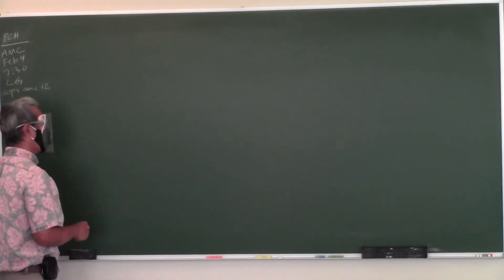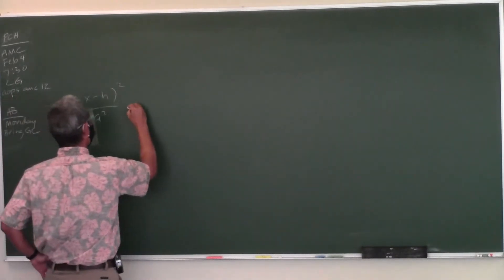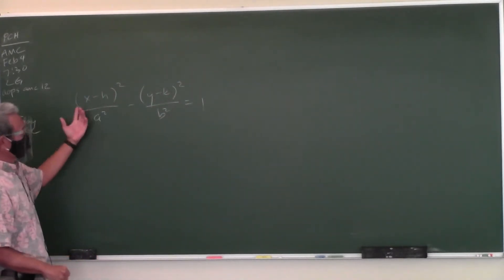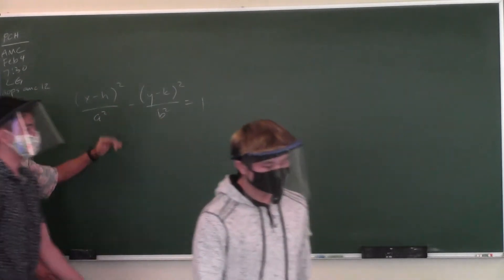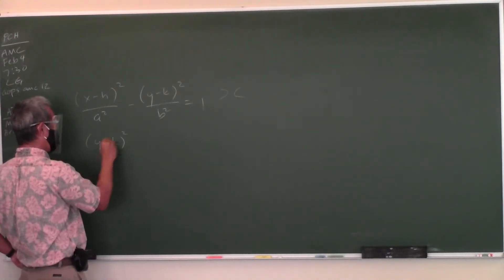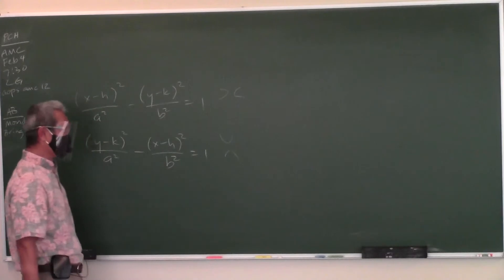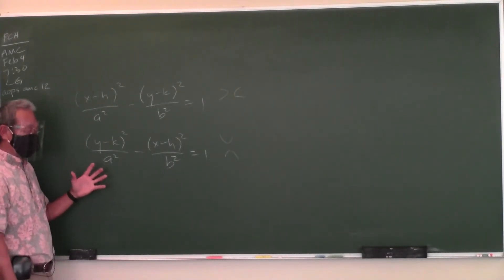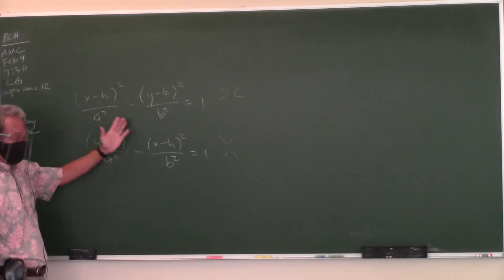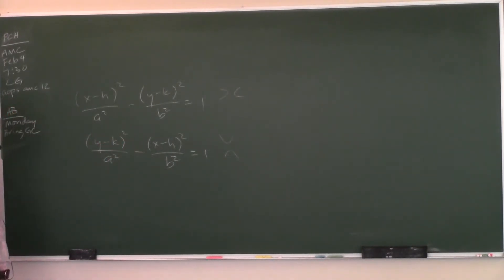In a hyperbola, these are your standard equations. If the x term is positive, the hyperbola opens left and right. If the y term comes first, the hyperbola opens up and down. In an ellipse, a² is always the bigger denominator, but in a hyperbola, a² always goes with the positive term and b² always goes with the negative term — so sometimes b² will be bigger than a² in a hyperbola.